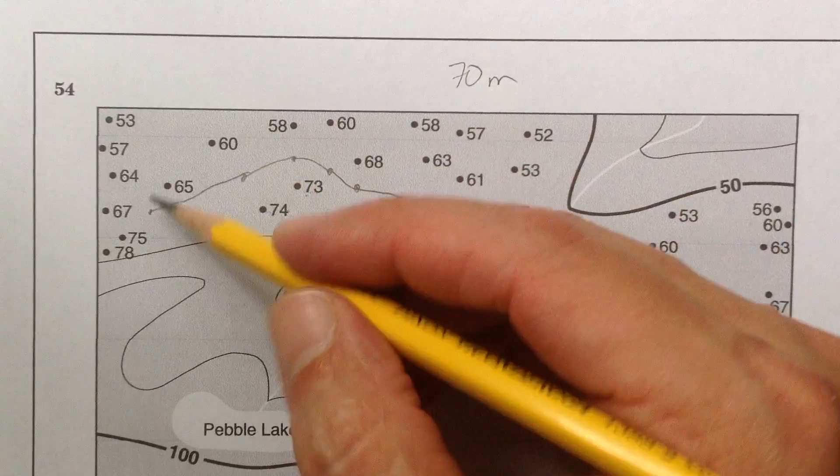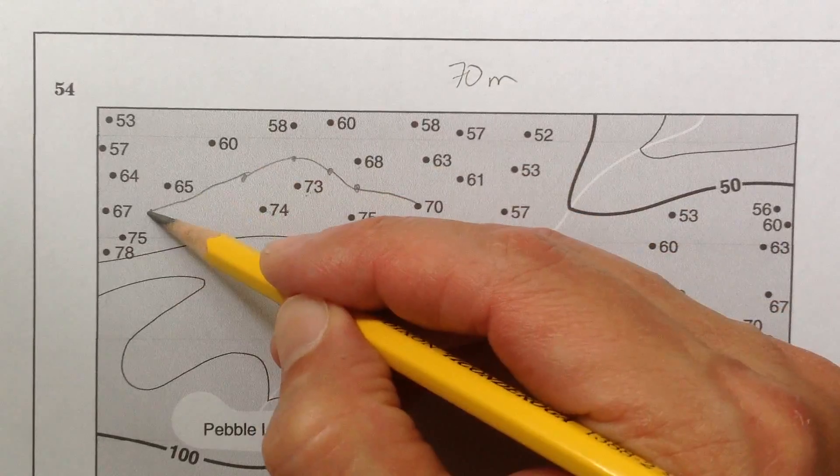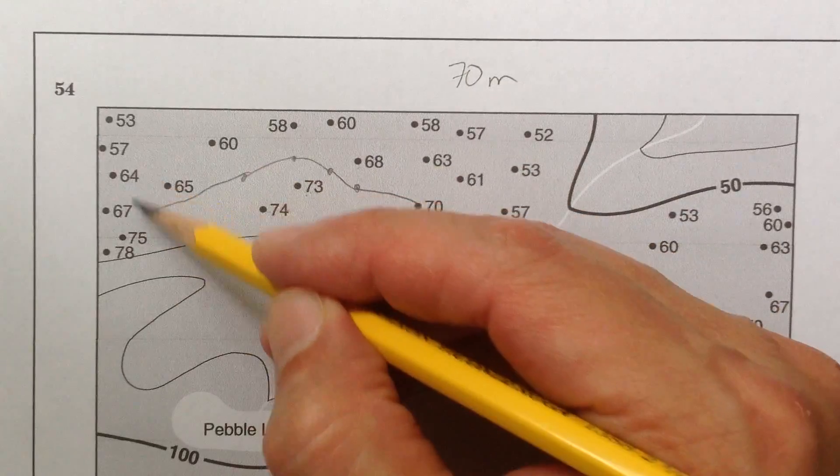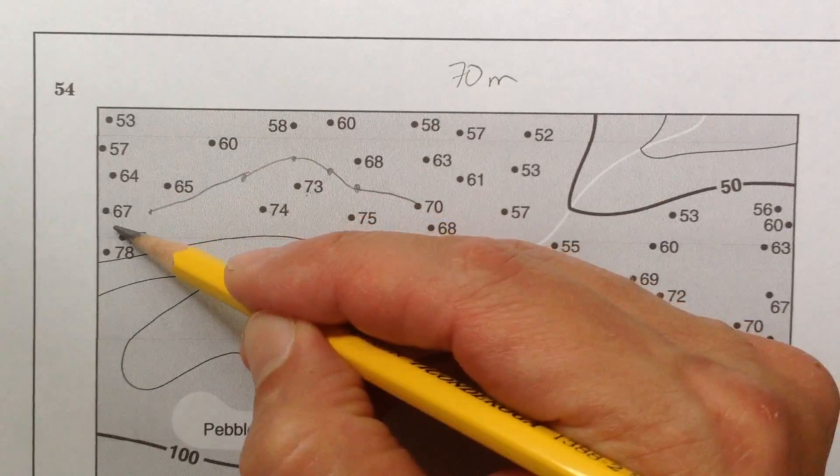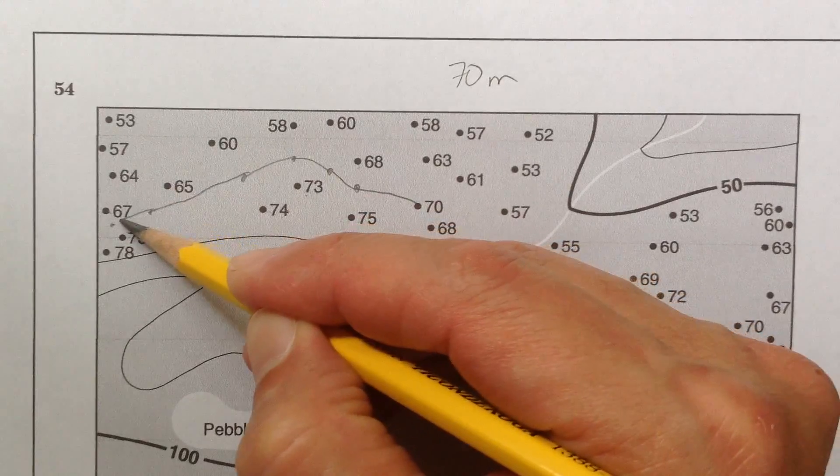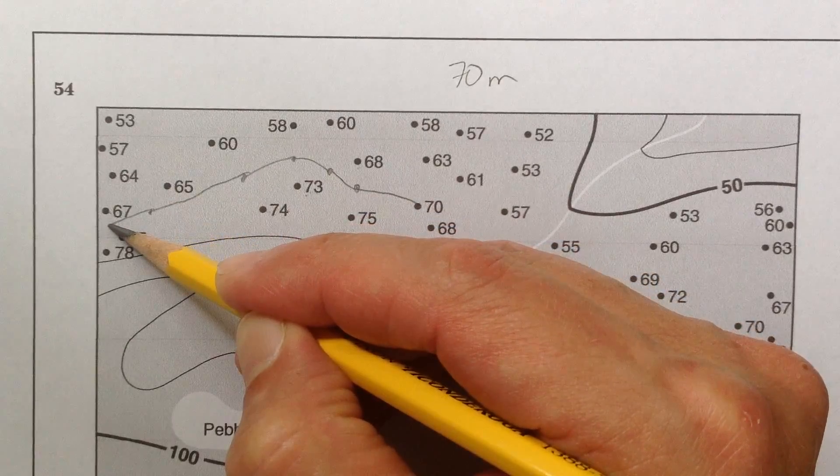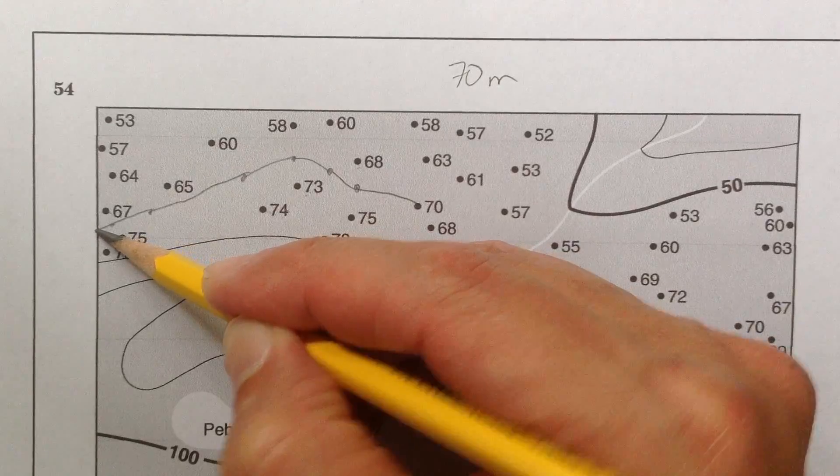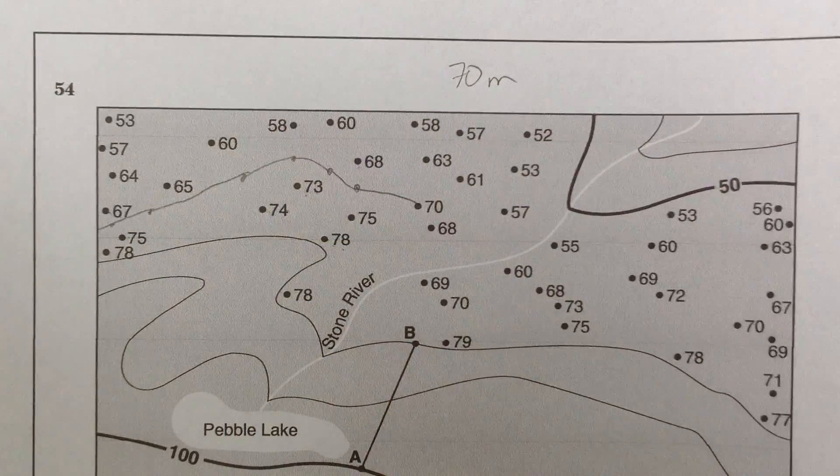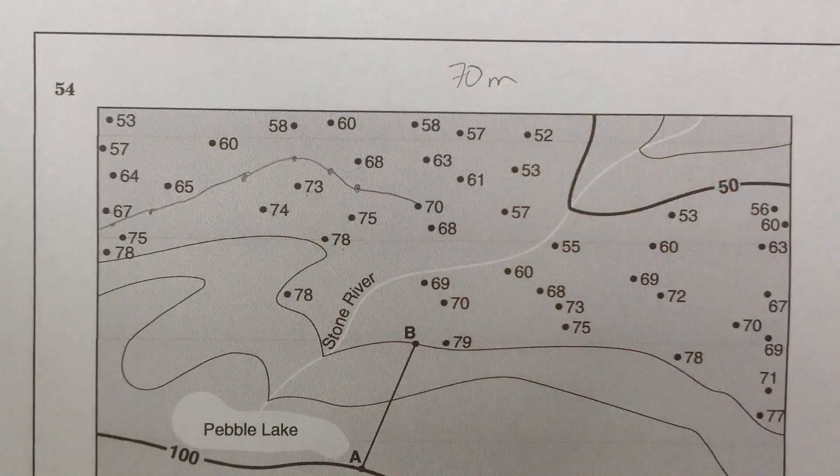And then where is the next 70? It's not between these two. But this is 75 and 67, so now I'm like right there. Okay, I'm at the edge of the page. So I'm just going to estimate and bring it off to the end of the map, which is something you totally need to do. But I can't leave it hanging. I have to go back here and do this.